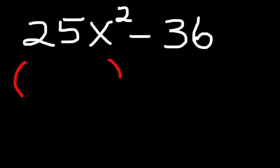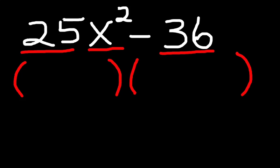You still set up two sets of parentheses, and this time in order for it to be the difference in two perfect squares, both the coefficient, 25, and the x squared must be perfect squares, and the other term, in this case 36, has to be a perfect square as well.